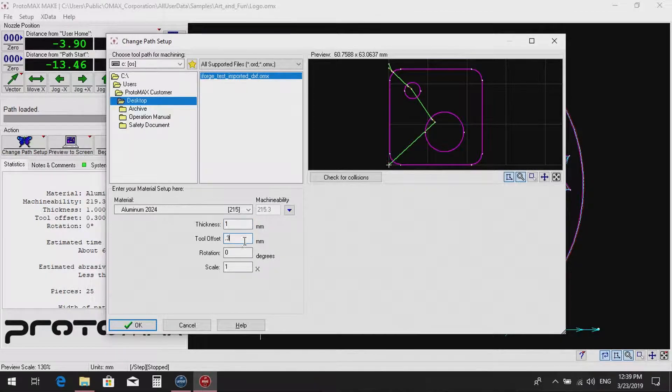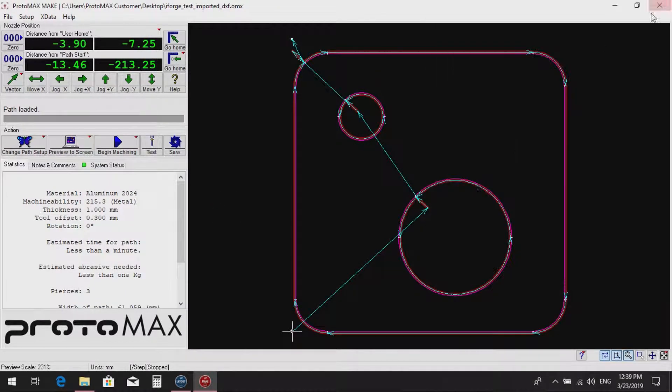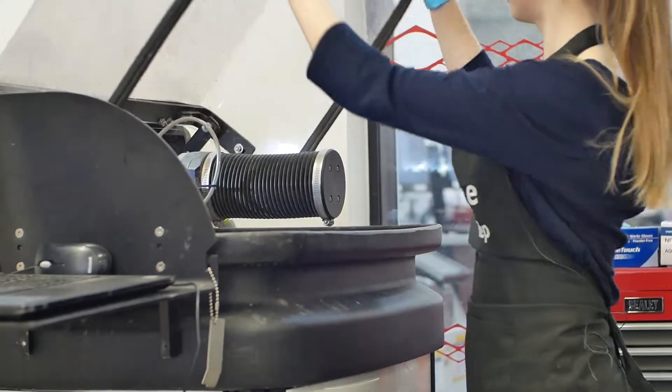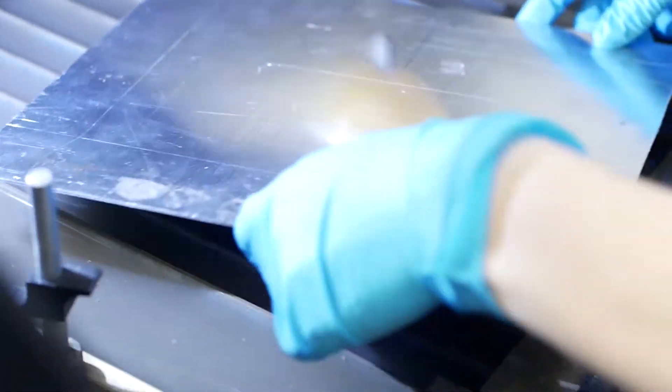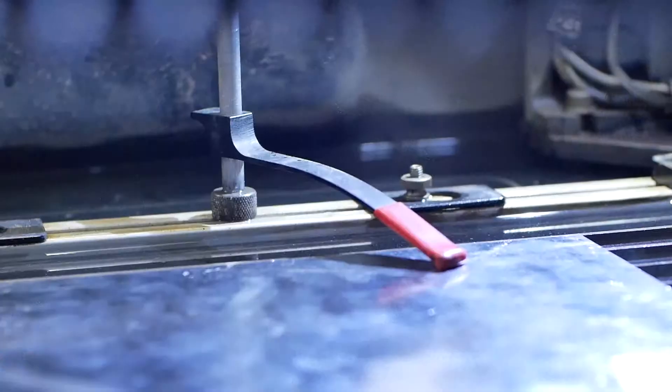0.3mm offset is a good starting point, but may need to be adjusted based on the inspection from a test cut. Open the lid of the machine. Now secure the material onto the bed using the material holding clamps, making sure that they will not interfere with the nozzle during operation.